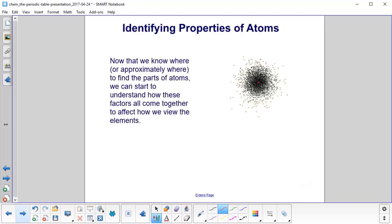The periodic table. Now that we know from the first couple units where, or approximately where, to find the parts of the atoms, we can start to figure out how these all come together to affect how we view the elements.